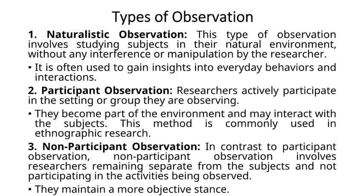What are the different types of observation? First: naturalistic observation. This type of observation involves studying subjects in their natural environment without any interference or manipulation by the researcher. It is often used to gain insights into everyday behaviors and interactions. Second: participant observation. Researchers actively participate in the setting or group they are observing. They become part of the environment and may interact with the subjects. This method is commonly used in ethnographic research.